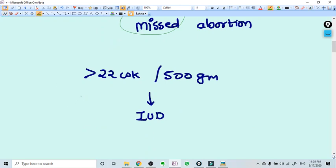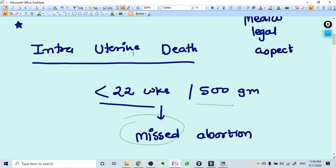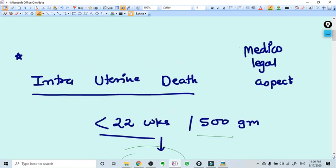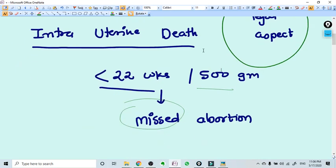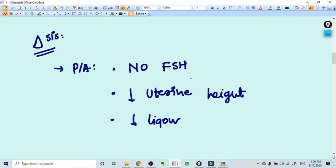But if more than 22 weeks or 500 grams, it will be called intrauterine death. This is very important for medical legal aspects. Now, how do you diagnose? The most important thing is when you diagnose, there is no fetal heart can be heard by stethoscope.